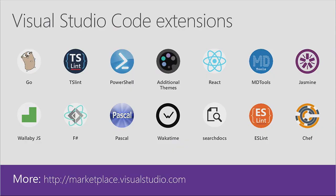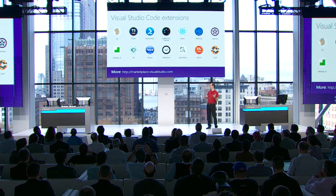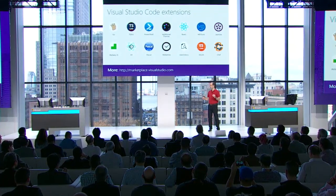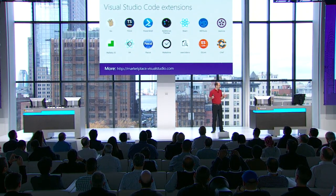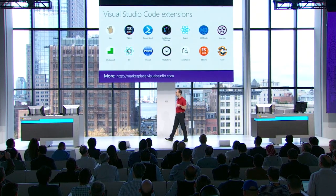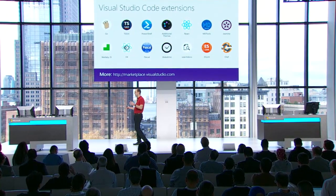One of the cool things about VS Code is how we make it great for everything — enabling an ecosystem of components and tools to plug in for a wide variety of scenarios. As Anders demonstrated with the Pascal extension, you can now integrate extensions built from anyone, find them very easily through our gallery, and literally install them in seconds inside your IDE to light up new functionality. That's true for a wide variety of different languages as well as different scenarios — if you want a linter or other source control tools, you can plug those in as well.